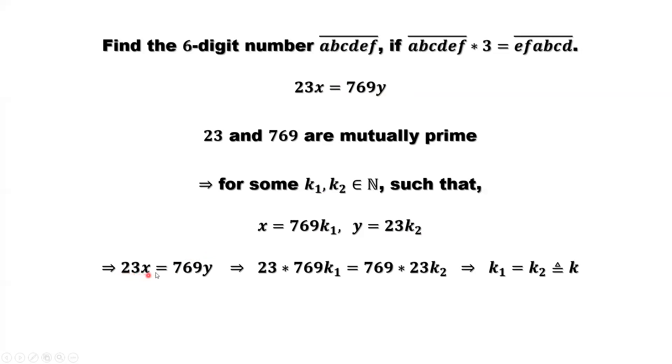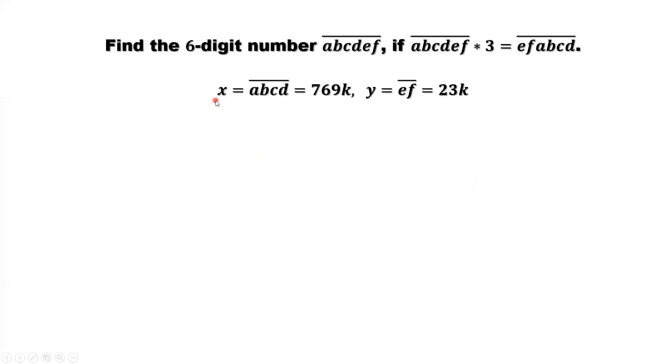Because 23X equals 769Y, we replace X and Y by those two results. We have 23 times 769K1 equals 769 times 23K2. From this equation, you can cancel 23 on both sides, 769 on both sides. Only thing left on the left is K1. Right-hand side, that's K2. This implies K1 equals K2. We define K1K2 equals K. In summary, X equals abcd equals 769K. Y equals ef equals 23K.